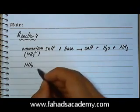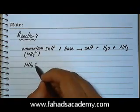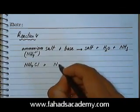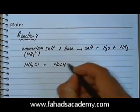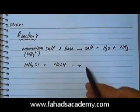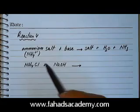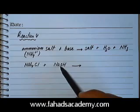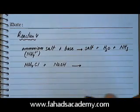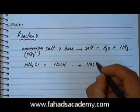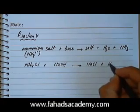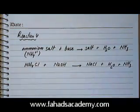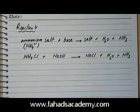For example, NH₄Cl is an ammonium salt. Reacting it with NaOH: the Cl remains and the ammonium is replaced by the sodium cation from the base, giving NaCl plus a water molecule and NH₃ gas. That is one example of this reaction.